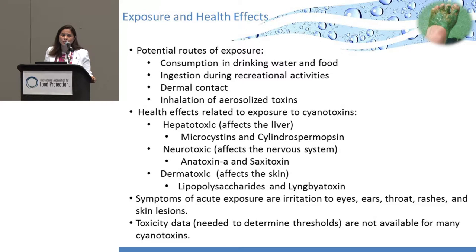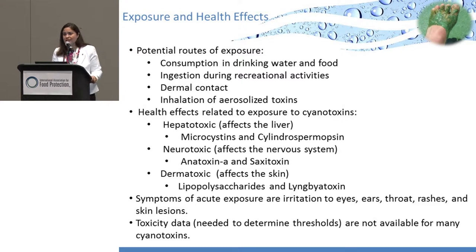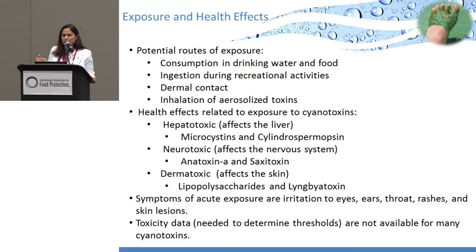There are different health effects depending on the body system affected. Microcystin and cylindrospermopsin are hepatotoxins — they affect the liver. We also have neurotoxic effects caused by anatoxin-A and its groups, and by saxitoxin, and dermatotoxins caused by lipopolysaccharides and lyngbyatoxin. Symptoms range from acute GI effects, allergic reactions, rash, and ear infections, to more serious chronic effects such as liver damage. Toxicity data is very limited for most toxins — we have an almost complete profile for microcystin-LR but not for the other 100 congeners.